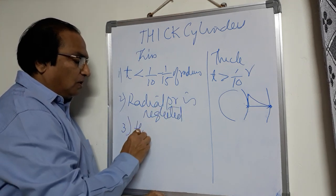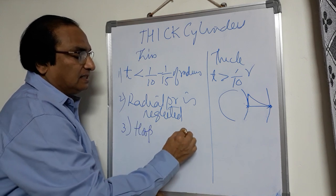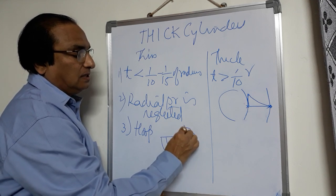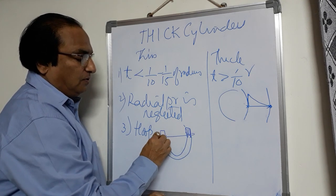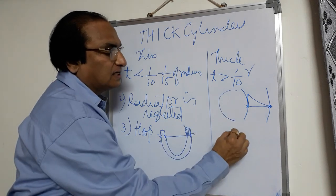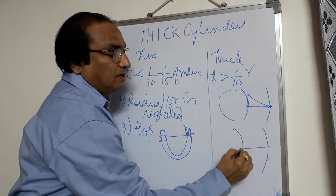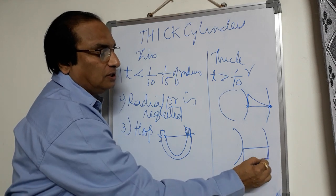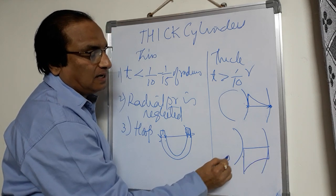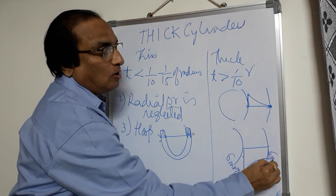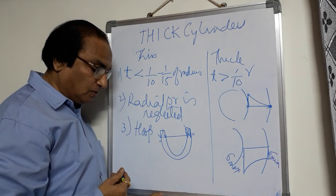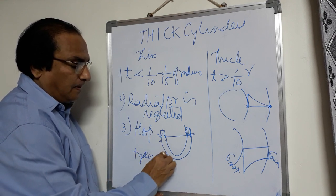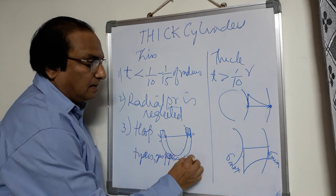The third condition is hoop stress. In case of thin cylinder, if I draw the hoop stress, it remains uniform across the thickness. But in case of thick cylinder, if the thickness is more, you observe that on the inner face the hoop stress is maximum and as you go outside the hoop stress is minimum. Hoop stress is maximum on the inner surface and minimum on the outer surface. Examples of thin cylinders include tires, gas pipes, and water tanks.